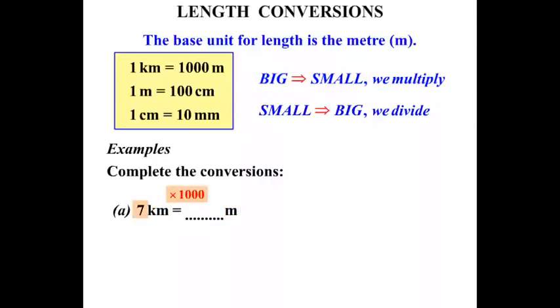So seven times a thousand is seven thousand. So we know that seven kilometers equals seven thousand meters. Again, you may just know that and that's fine if you do.